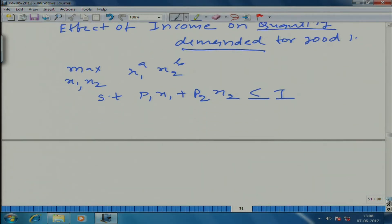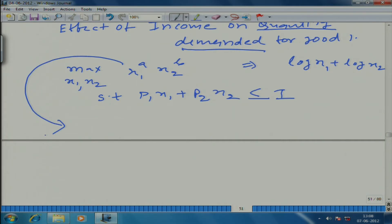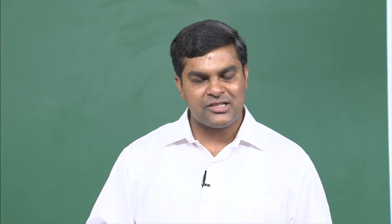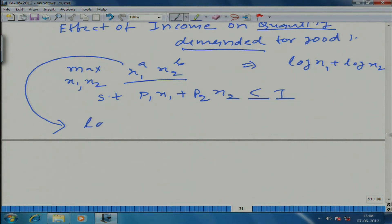If you solve it — remember a similar problem we solved in class — we had solved log x + log y, where log x is log of x1 and log y is log of x2. The optimal level of consumption does not depend on the form; it depends on the preference. So if we take any monotonic transformation, that would also work to get the optimal x1 and x2. Taking log is a monotonic transformation of this particular function.